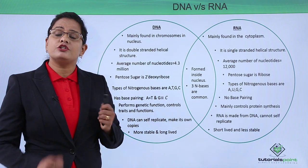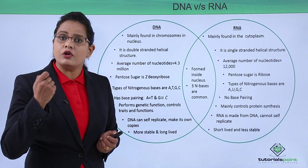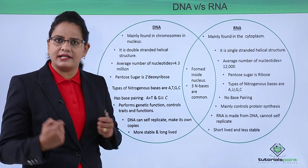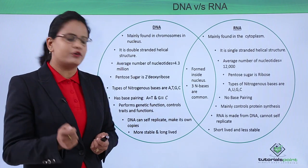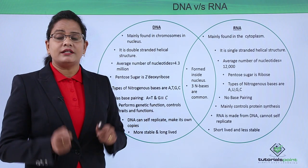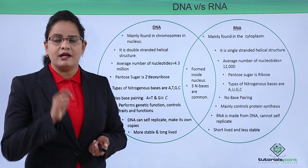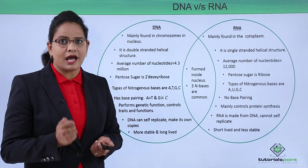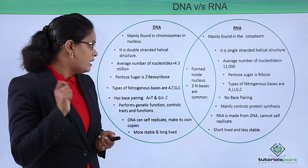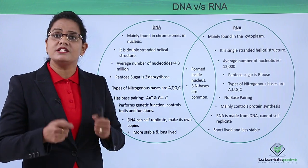The function of DNA is to perform genetic functions — to control traits such as height, weight, eye color, and skin color. Everything about traits is controlled by DNA. RNA is very important because while the message for the traits is present in DNA, expression cannot happen without RNA. So RNA is used in the synthesis of proteins.